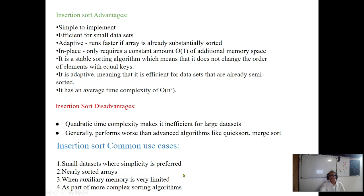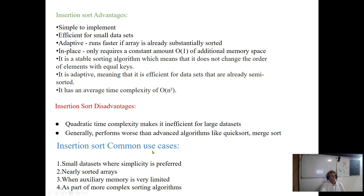These are the insertion sort advantages: it is in-place O(1), it is adaptive, and it has average O(n²). It is a quadratic O(n²) — when the data is totally reversed in order, then it will be O(n²) generally.